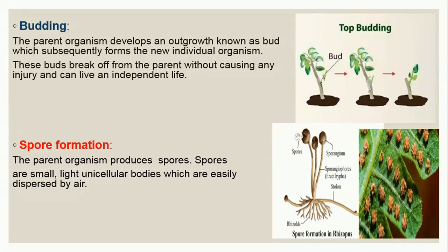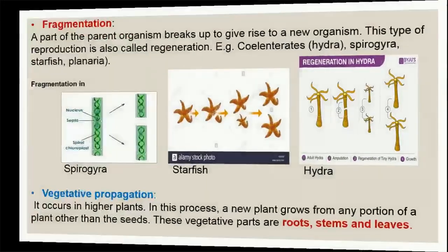The next type is spore formation, also known as sporulation. In this kind of asexual reproduction, the parent organism produces spores. Spores are small, light, unicellular bodies that are easily dispersed or spread by air or wind. Examples of organisms that carry out sporulation include mushroom, mold, and Rhizopus — these are all fungi. The spores are found in a structure called the sporangium, which can burst open to release them. When spores fall on a suitable surface — such as a leaf, wood, or soil — they can grow into new offspring.